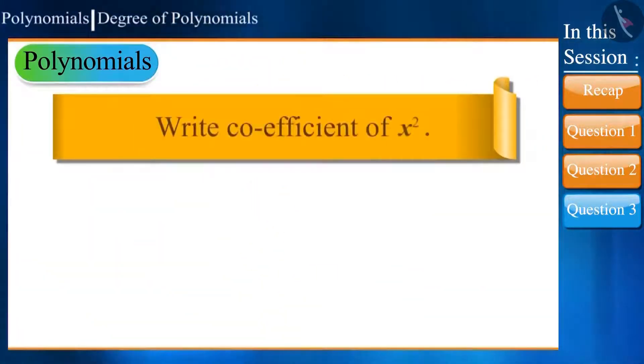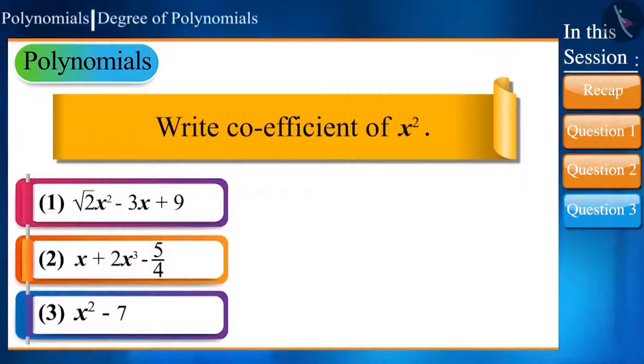You have to write the coefficient of x square in the given polynomials. Such questions are quite easy. Just that, we have to focus on x square and have to write its coefficient.